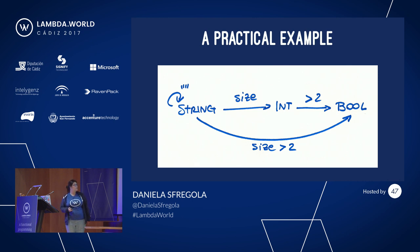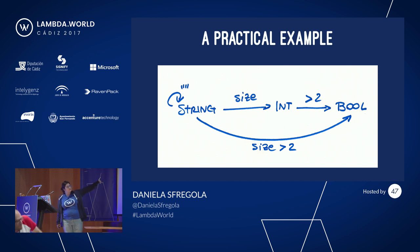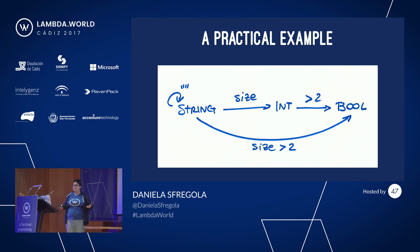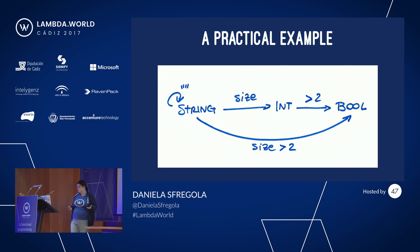Imagine you have the set of all the strings in the world, and then all the ints and all the booleans. We know that if there is a function between string and int — let's call it 'size' — and we have a function from int to boolean called 'bigger than two', we know that automatically we can create a new function called 'size bigger than two'. We do this all the time. Similarly, it's possible to define the identity on a specific type.